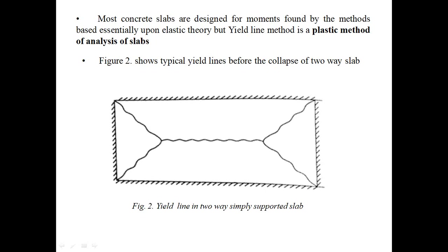These are the yield lines. This slab is divided into four segments: number one is trapezoidal, number two is triangular, number three is trapezoidal again, and number four is triangular. So it is divided into four segments due to the yield lines. This shows yield lines in a two-way simply supported slab before collapse.